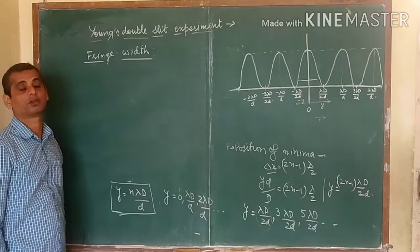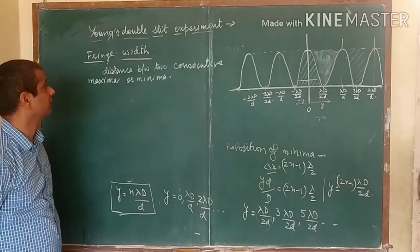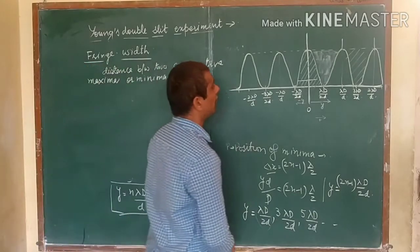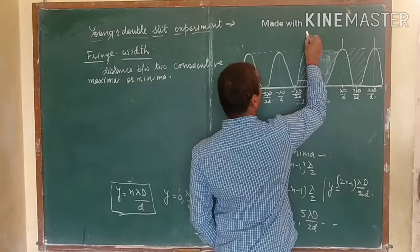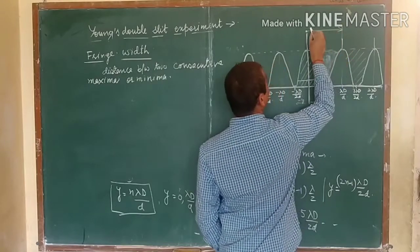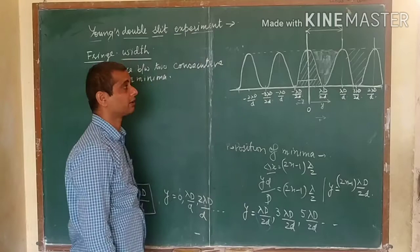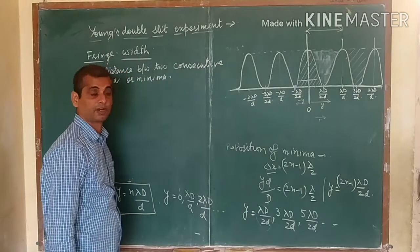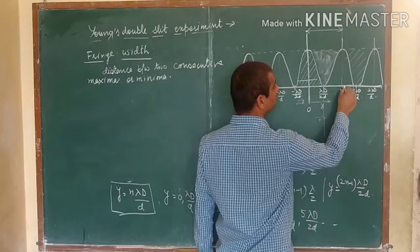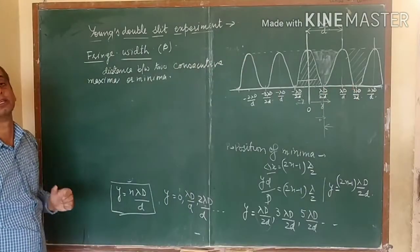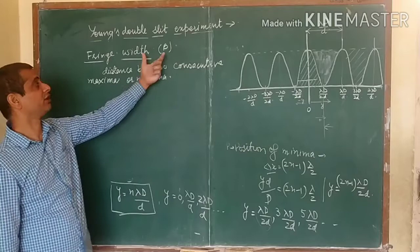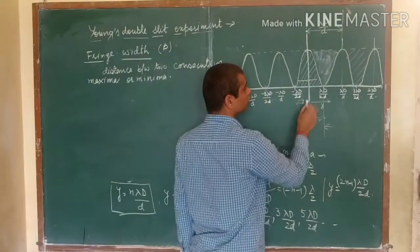Now I'm going to find out the fringe width — the distance between two consecutive maxima or minima. The distance between the first minimum and the second minimum represents the fringe width. Similarly, it is the distance between two consecutive maxima or minima. We generally represent the fringe width by beta (β).